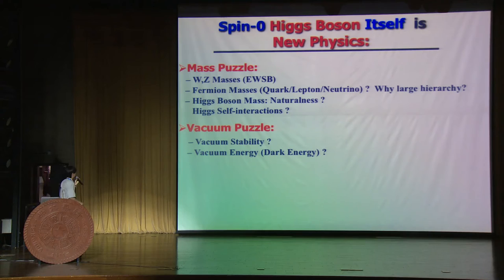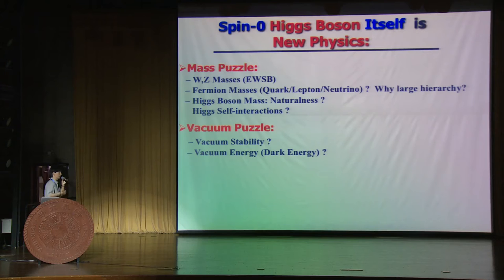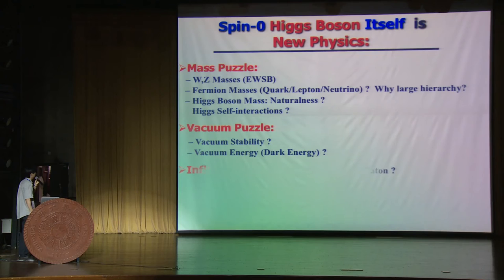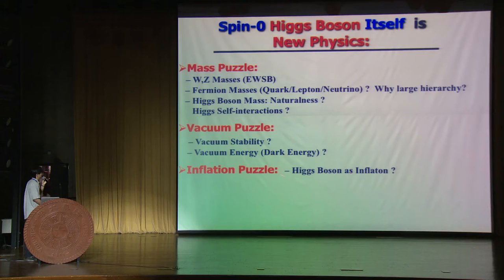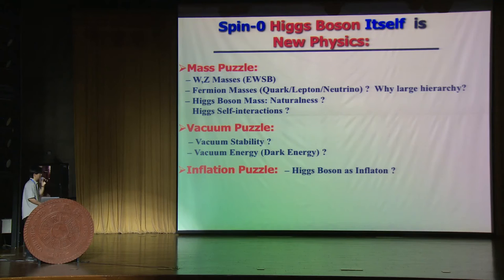The Higgs quartic self-interaction is completely new and is itself brought in by the Higgs. Then we have the vacuum stability: the standard model vacuum is found to be not stable up to a certain scale, like 10 to the power of 11 GeV, far below the Planck mass. We also have the vacuum stability pattern discussed yesterday. For inflation, strong cosmological observations require inflation, and we can ask whether the Higgs boson could be the inflaton — and in the standard model, does it work and how to modify it.